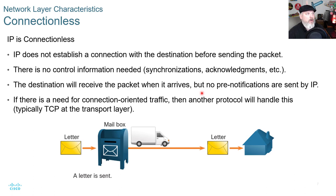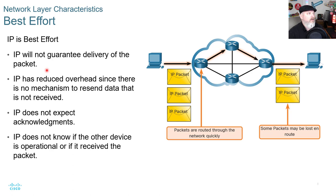If connection-oriented traffic is needed, another protocol handles this — typically TCP at the transport layer. IP is best effort: it will not guarantee delivery of the packet. It simply sends it with no mechanism to resend data that's not received. IP does not expect acknowledgments back and does not know if the other device is operational or has received the packet. IP packets get sent, routed best effort, and may or may not arrive.